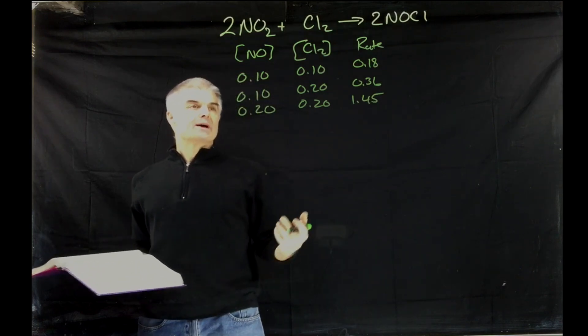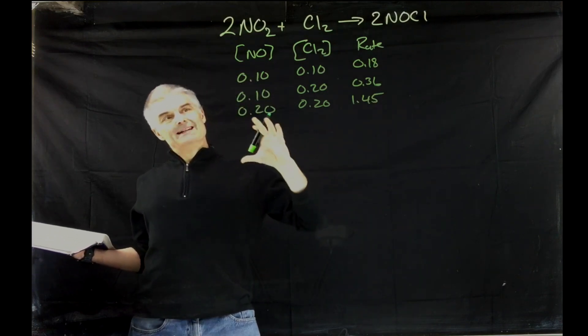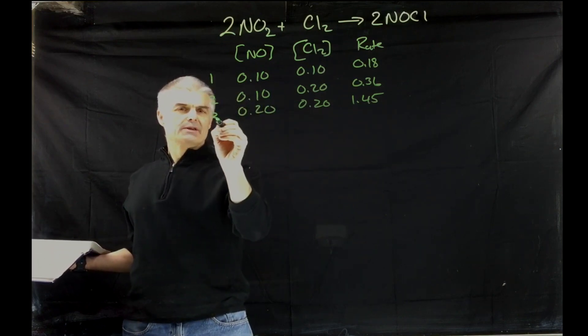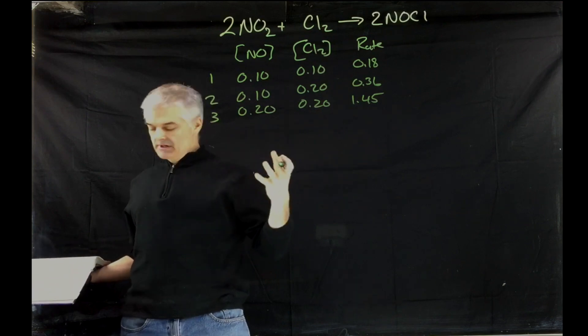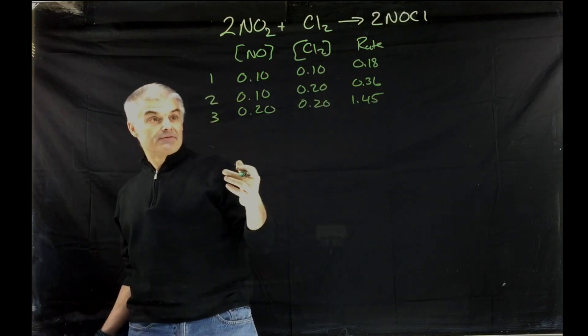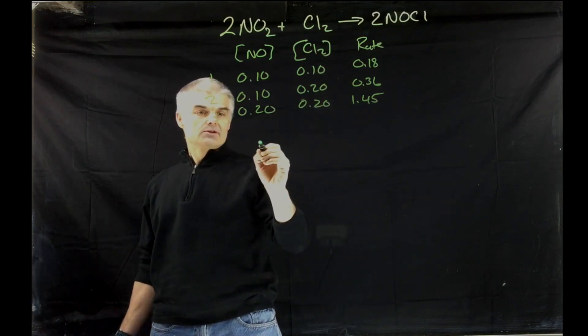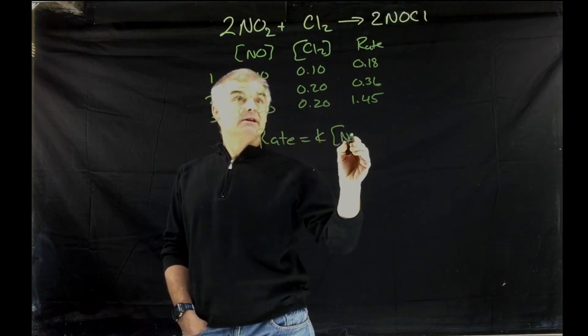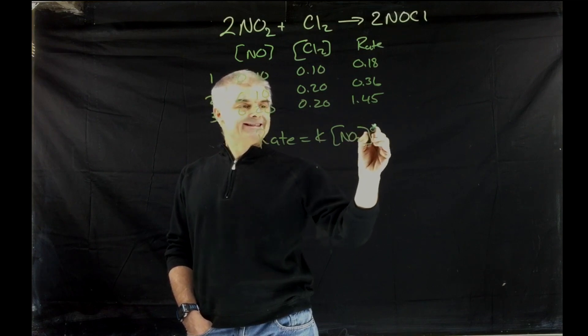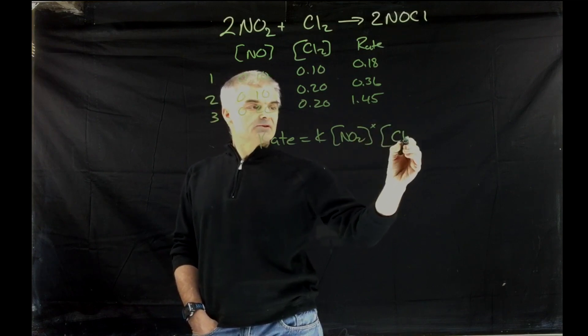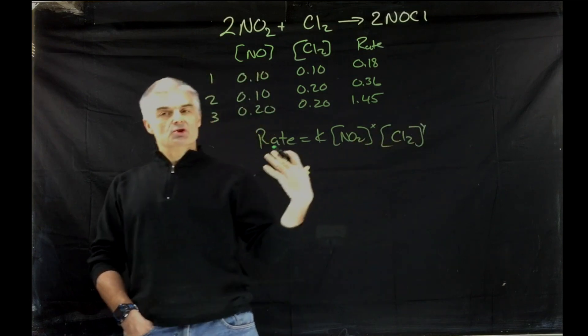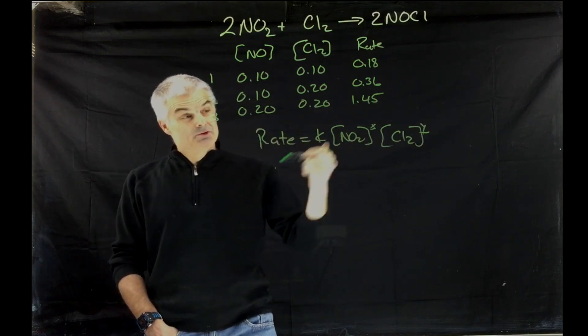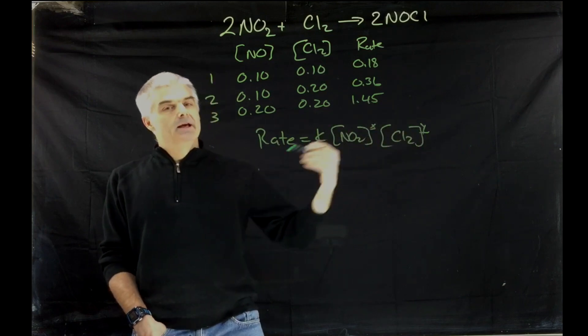Now to solve this problem, what you have to do is divide reaction one by reaction two. We're going to call this one, this two, and this three. And you set it up. Now the rate law is going to have the form rate equals k times the concentration of NO2 to the x power times Cl2 to the y power. So the goal of this question is to find what is k, what is x, and what is y. And actually what you'll do is you'll find x, and then y, and then k.